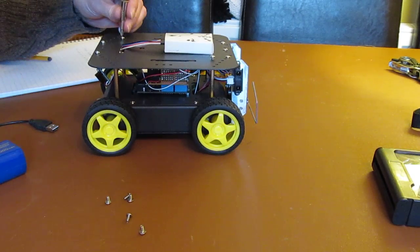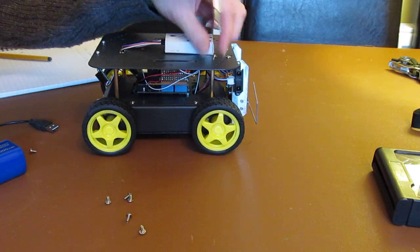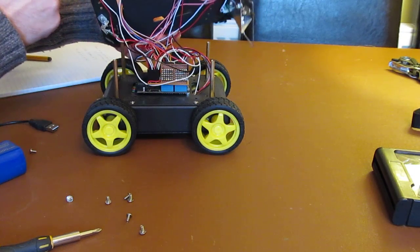I'll take off the top. I've just secured this very loosely, so I can remove it. So again, this plate on top came as part of the robot buggy base.